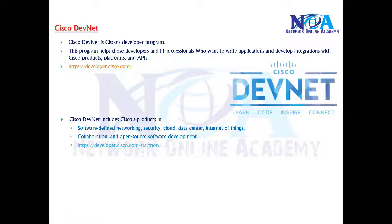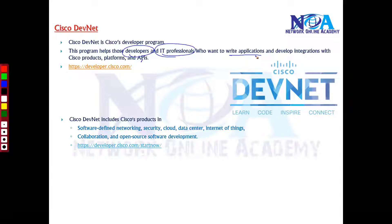The next thing we will get into is something called Cisco DevNet. DevNet is a Cisco developer program that is going to help developers and IT professionals. What they can do is write their own applications, develop their applications, and integrate those things with Cisco products and platforms. DevNet is more relevant to developers.